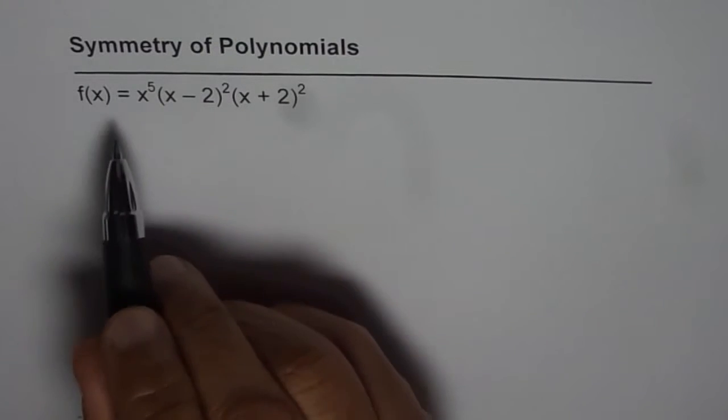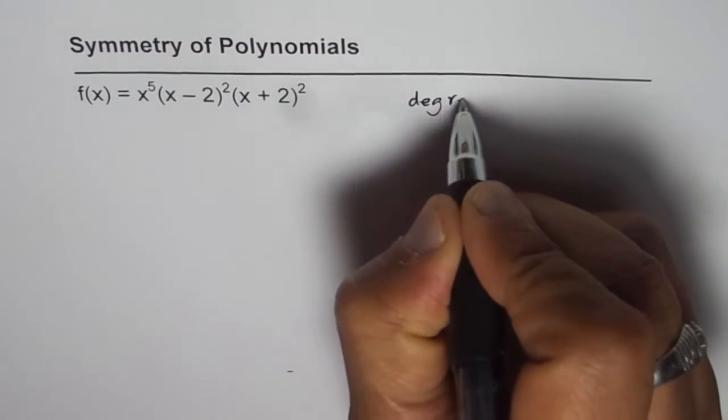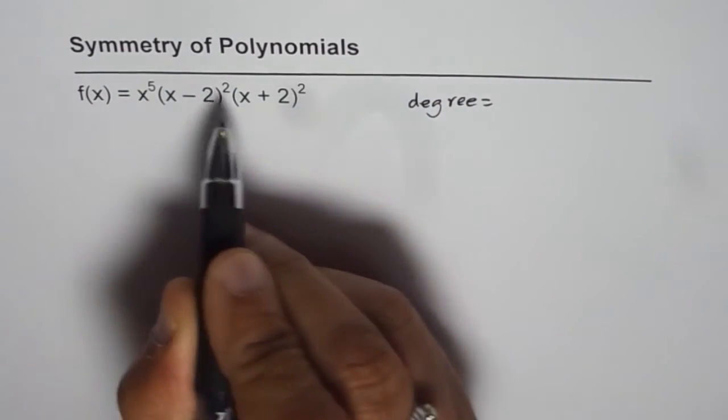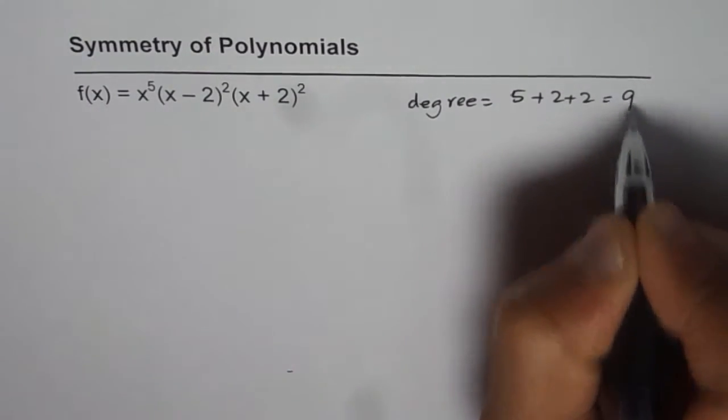Now, the degree of this polynomial is how much? Let's figure it out. We have degree of 5 plus 2 plus 2. We have to add them up. The degree is 9.